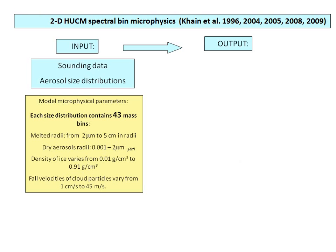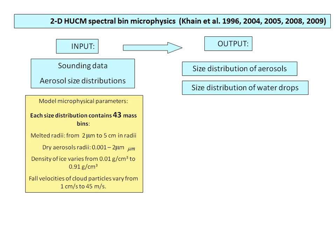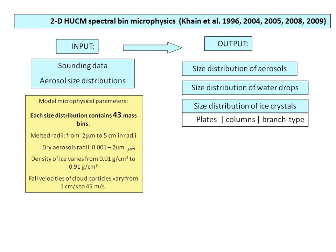For a long period of time, we developed spectral bin microphysics at the Hebrew University of Jerusalem. The model is specially designed to describe cloud-aerosol interaction. We have a size distribution function for aerosols in our model, and then a size distribution of water droplets. We do not separate between small droplets, cloud droplets, and rain — we have only one size distribution and calculate collisions between them.